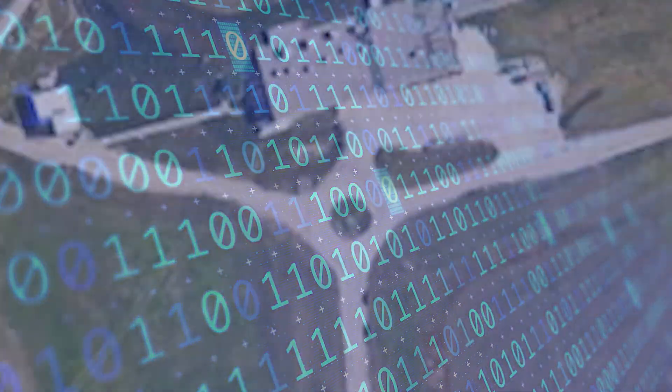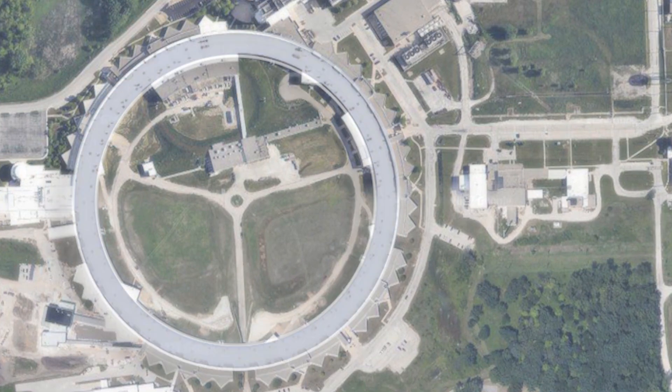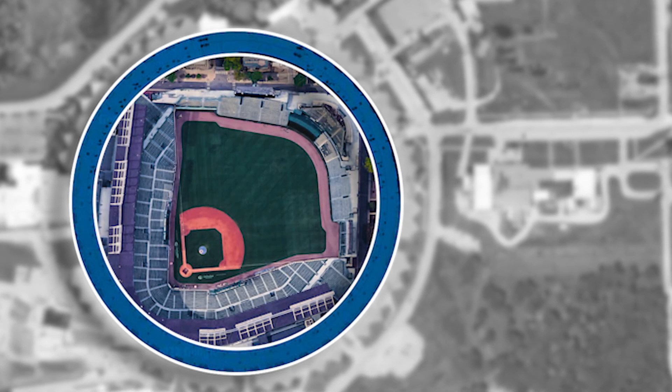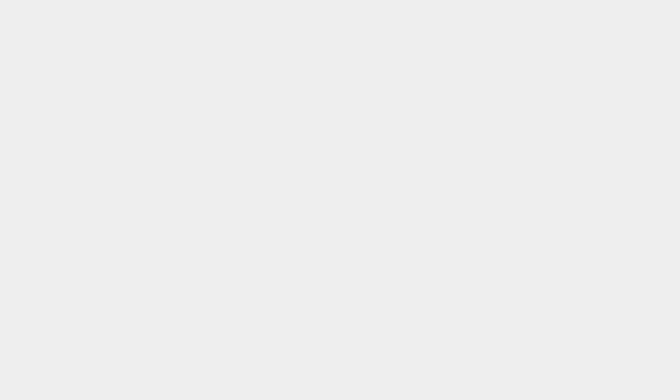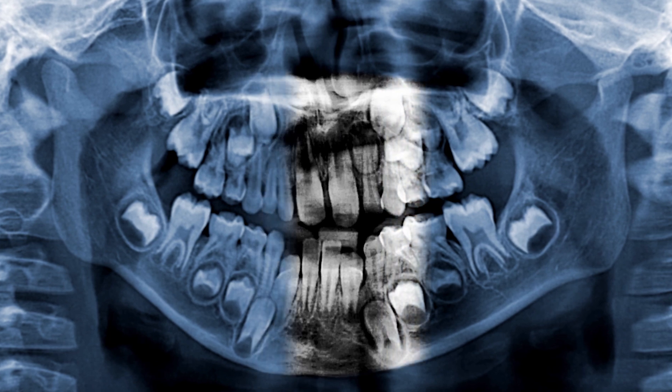The advanced photon source, also known as the APS, is a ring-shaped machine that could encircle an entire sports stadium. It generates high-energy x-ray beams that are a billion times brighter than those a dentist uses to see inside your teeth.